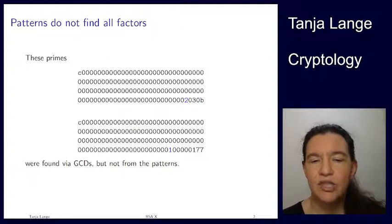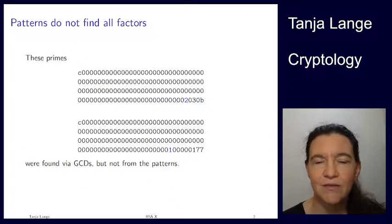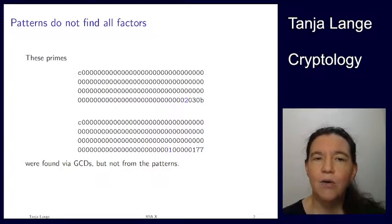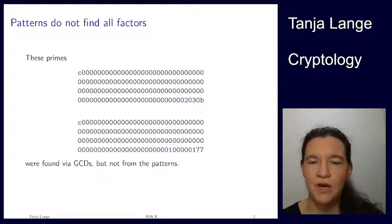These came up from the GCDs. We didn't find them when we took the patterns and ran with it. So how can we find such primes?